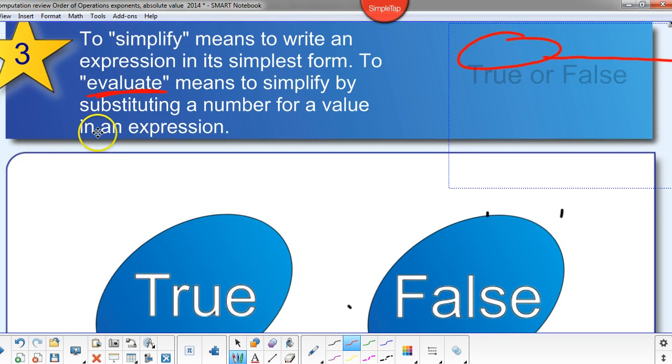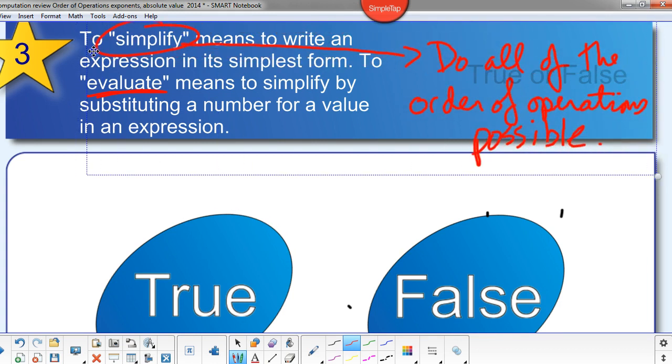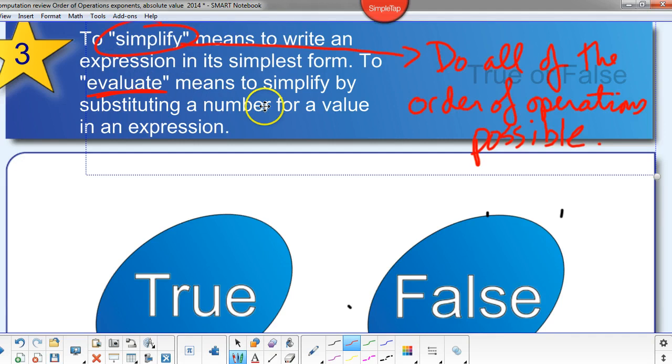Number three. To simplify means to write an expression in the simplest form. To evaluate means to simplify by substituting a number for a value in an expression. That is true. Simplify, I'm going to go into step four. Simplify means to do all the order of operations possible. So this is a true statement here.